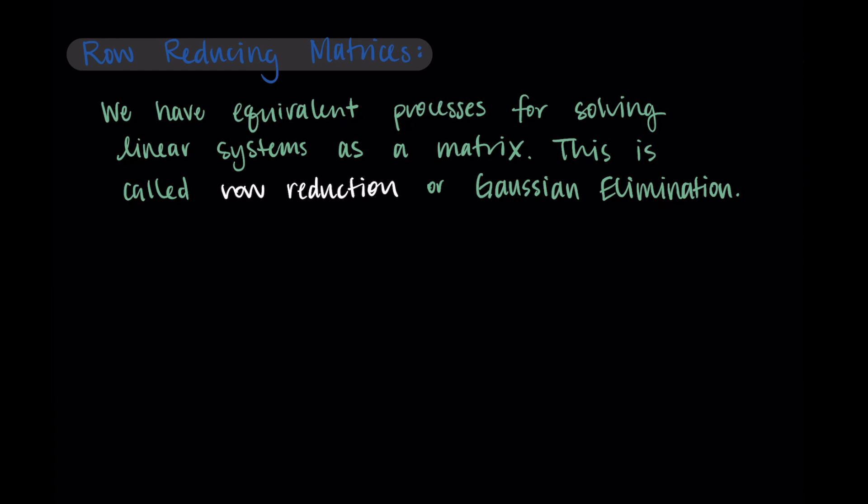So row reduction works similarly to the addition or subtraction method, and we have some specific operations that are allowed in row reduction. These are things that don't change the solutions to the matrix. They don't change the solutions that come with the linear system. They just manipulate the matrix to make it easier for us to work with.